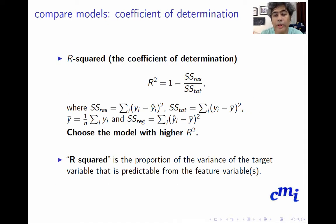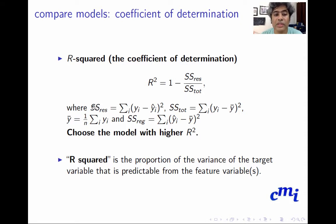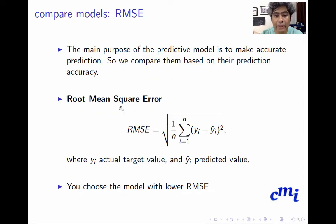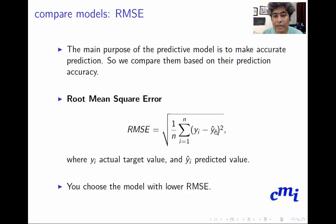Another very popular model selection criterion is the coefficient of determination, or R-squared. R-squared is defined as 1 minus the sum of squares of residuals divided by the total sum of squares. The sum of squares of residuals is the sum of (y_i − ŷ_i)², which is the squared error summed over all observations.